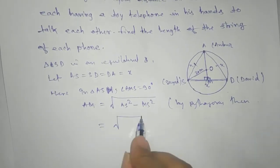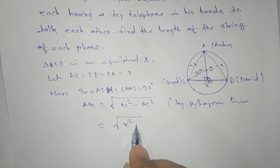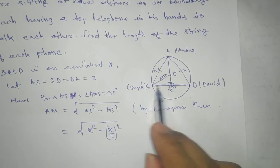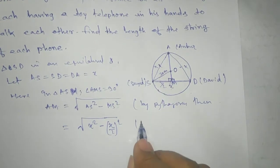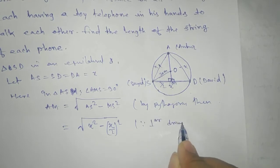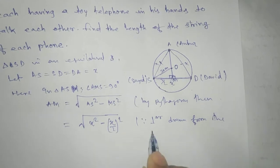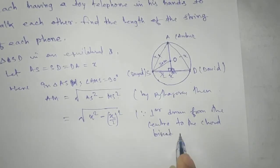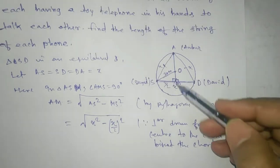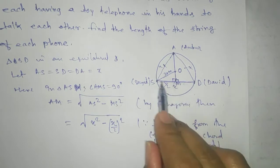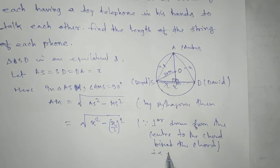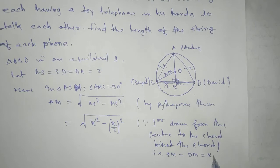We get AM equals the square root of AS² minus MS², which is X² minus (X/2)². Why is MS equal to X/2? Because the perpendicular drawn from the center to a chord bisects the chord. OM is perpendicular to SD, and SD is a chord of the circle. Therefore SM equals DM equals half of SD, that is X/2. So AM equals (√3/2)X.